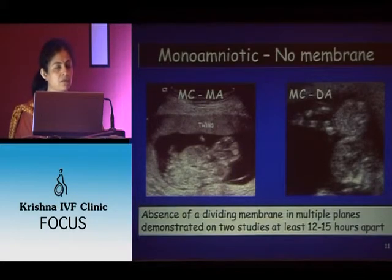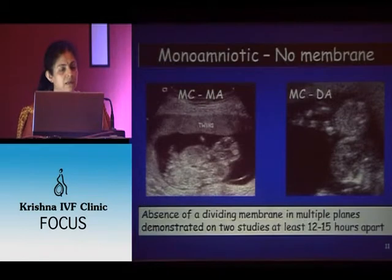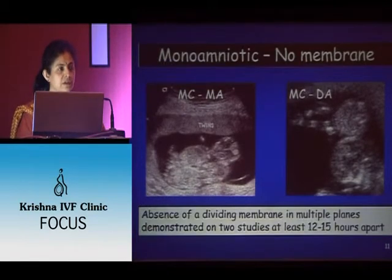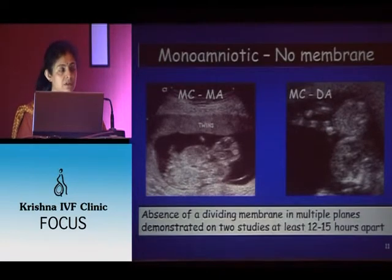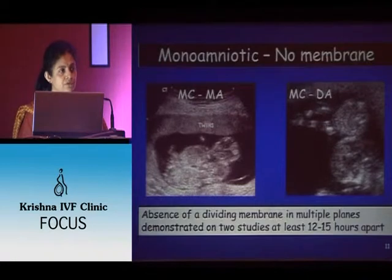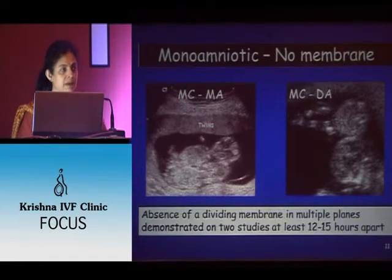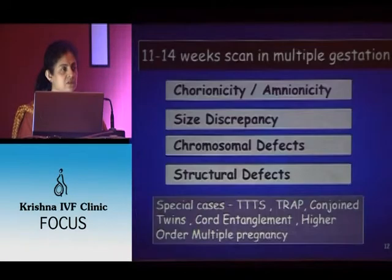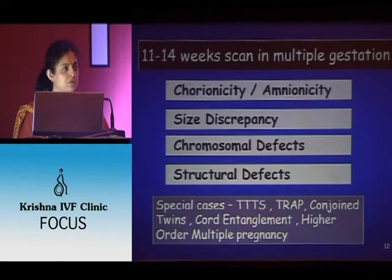Membrane thickness has been used but is not very efficient for determining chorionicity; the beam should be perpendicular. For monoamniotic twins there is no membrane at all, and the prognosis is quite bad. It is very important to determine whether it is really monoamniotic or diamniotic — look in multiple planes, increase gain, and repeat the scan a few hours apart to confirm.